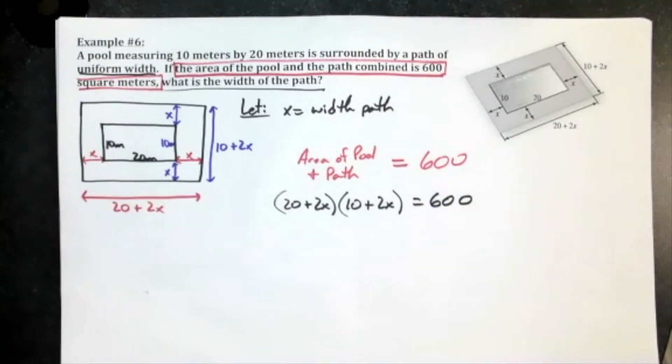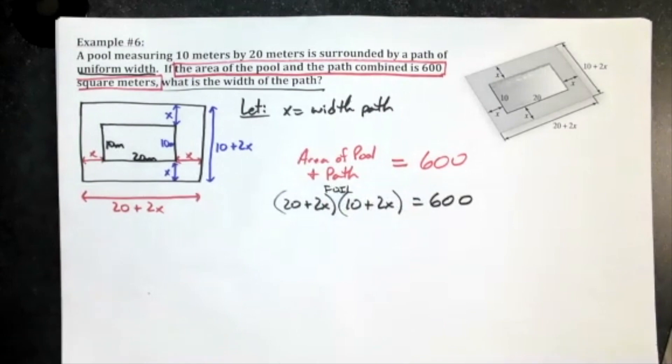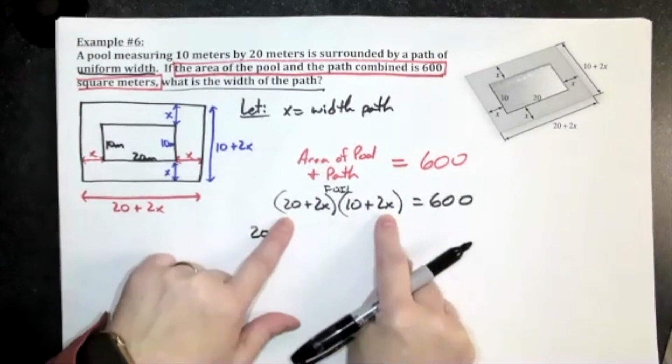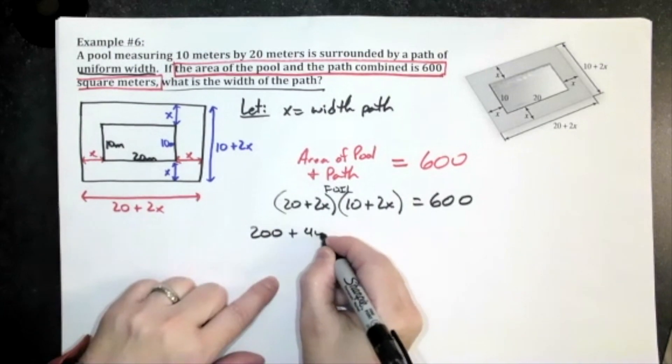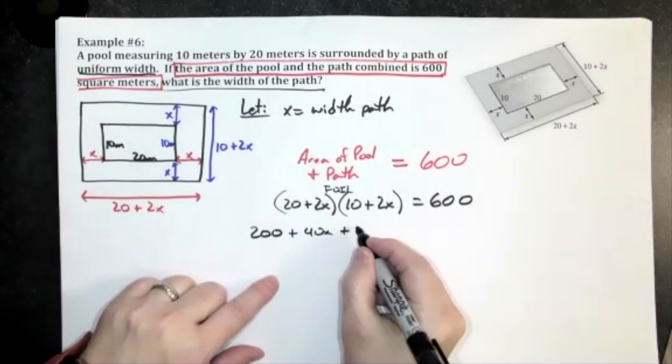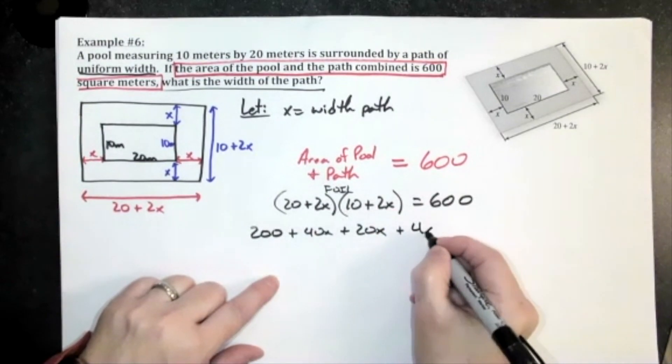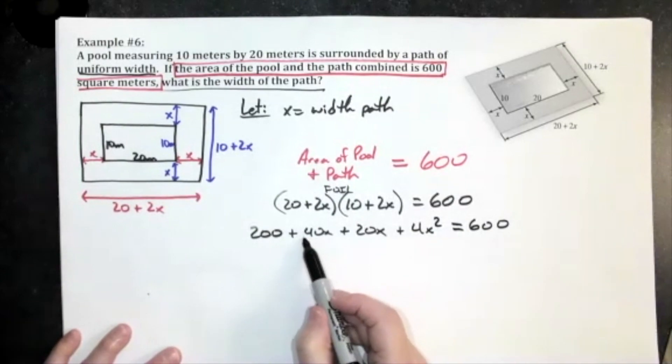So on this one you have to come up with the equation, which makes it a little bit more challenging. On this side over here we just have a nice simple little foil. So we'll foil that out. 20 times 10 is 200. If I show all the steps, 20 times 2x is going to be 40x, 10 times that 2x will be 20x, 2x times 2x will be 4x squared, and then equals 600. That's just foiling that out and showing all steps.